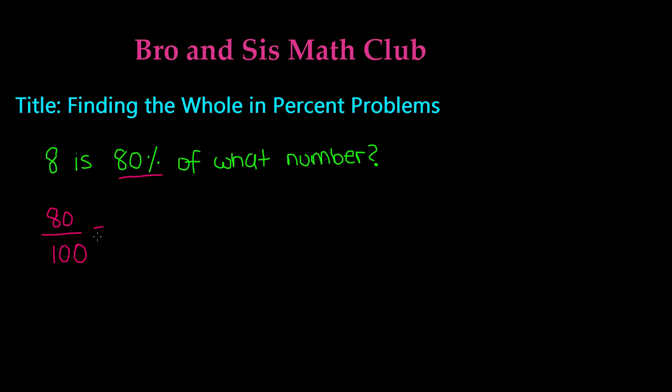We know that 80 over 100 is equal to our second fraction, which is going to be is over of. In this case, it says 8 is 80% of what number, so it's already telling us that 8 is going to be the is, so that means it's going to be in the numerator. But in this case, we don't know what that number is. We're trying to find the whole, so we can represent this as a variable. Let's say we use the variable x.